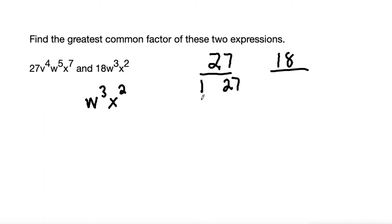Is there 2 times anything that would be 27? No, it's odd, so that doesn't work. 3 times 9 is 27, so that's another one. Can we do 4? No. 5? No. 6? No. 7? No. 8? No. And then we get back to 9, so we're done. And all of these are the factors of 27.